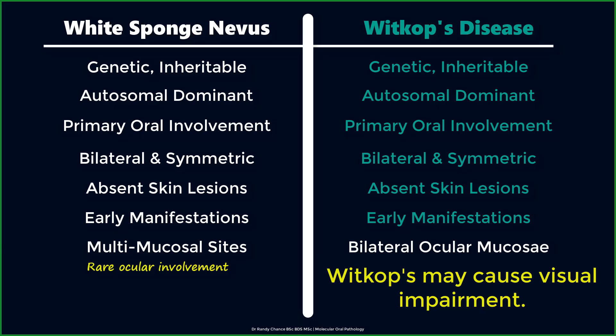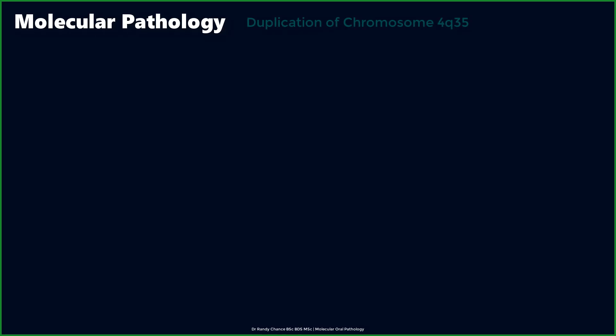Another difference between the two disorders is the underlying molecular pathology. White sponge nevus results because of an autosomal dominant mutation in the helix domain of mucosal-specific keratin genes, keratin-4 and keratin-13, and these mutations may be deletions or point mutations. For Witkop's disease, the genetic anomaly has been localized to the long arm of chromosome 4, in which a heterozygous duplication process takes place at the telomeric region, leading to a total of 3 alleles instead of 2, quite like a partial trisomy.